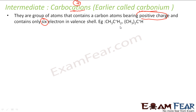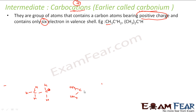Let me draw the structure of these carbocations. For example, CH3-C+(H2) or CH3-CH. Here I draw carbon with a positive charge attached to hydrogen, and another with two methyl groups and one hydrogen with a positive charge. The positive carbon will have six electrons in the valence — two, four, and six.